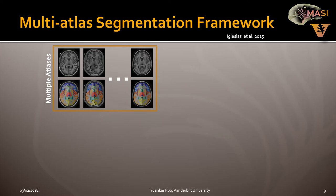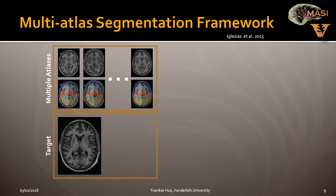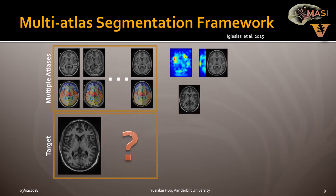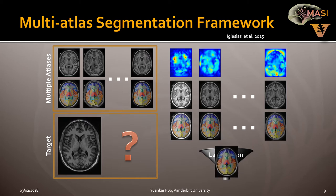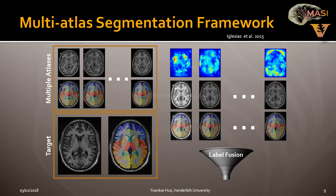Multi-atlas segmentation is example-based segmentation and was the state-of-the-art method before deep learning. The idea is to manually label a set of representative MRI T1 images — we now have T1 images and their labels. When a new patient comes, we do registration to register each atlas to the target image, obtain the deformation field, apply it, and then use label fusion to fuse each segmentation into a better one. Our lab focused on the label fusion component.